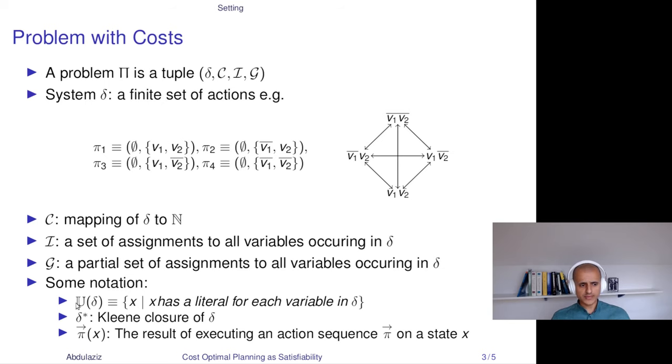Lastly, I would like to introduce some notation that I will use later. The first part is U of delta, which is the set of all full states, so the set of states that have a literal that covers each variable that ever occurs in delta. Then you have delta star, which is the Kleene closure of delta. And you have that notation which I use to denote the state that results from executing an action sequence pi on a state x.